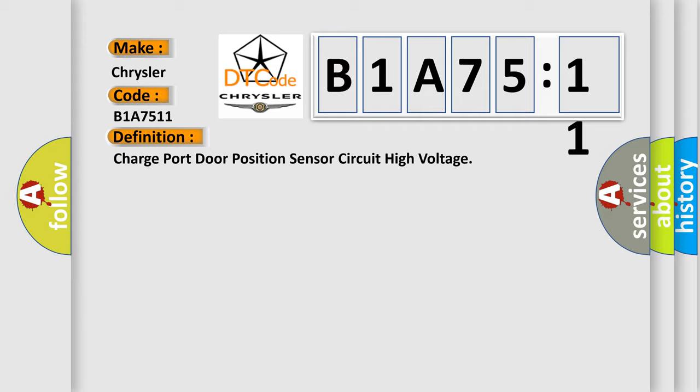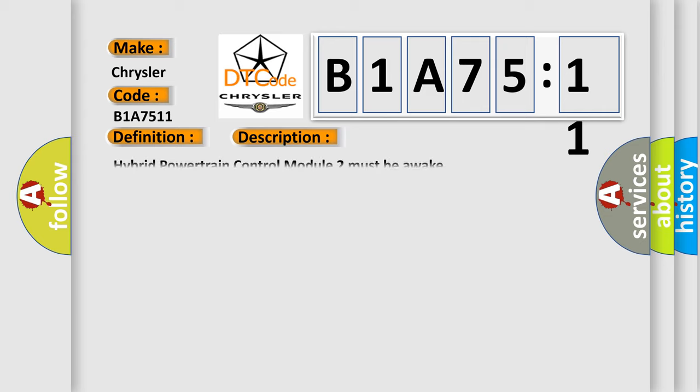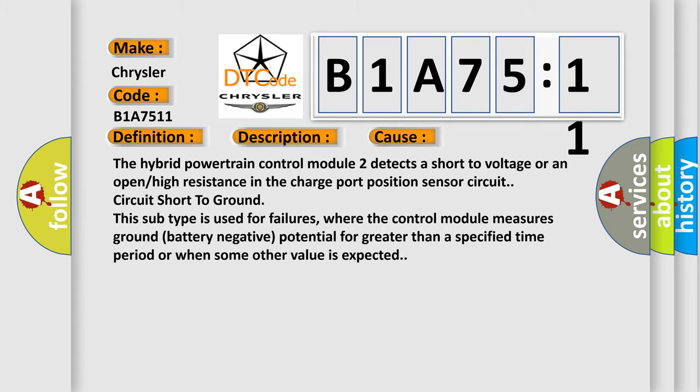And now this is a short description of this DTC code. Hybrid powertrain control module 2 must be awake. This diagnostic error occurs most often in these cases: The hybrid powertrain control module 2 detects a short to voltage or an open or high resistance in the charge port position sensor circuit.